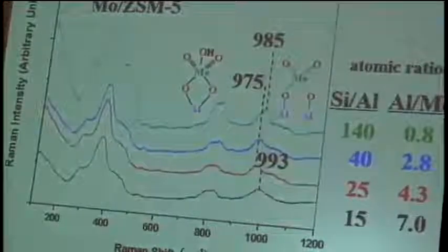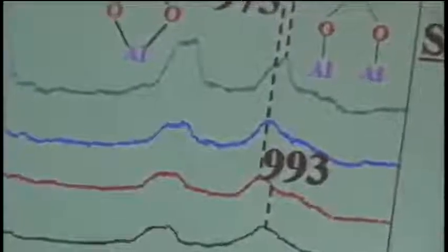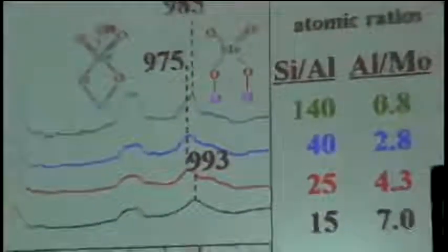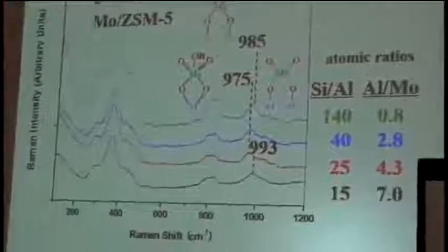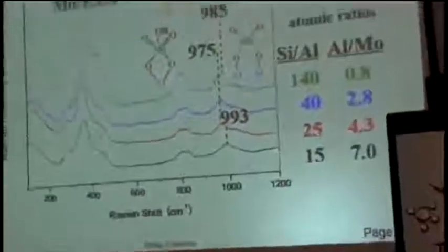We have an additional band. That has to be molybdenum going on silica. So if we run out of aluminum, it has to be on silica. So the structure that we proposed is molybdenum with two terminal atoms, molybdenum dioxyl anchored on silica sites.